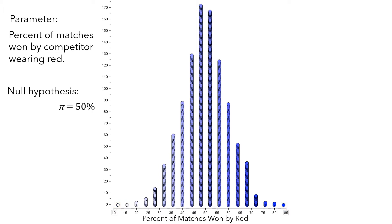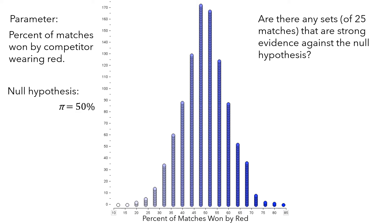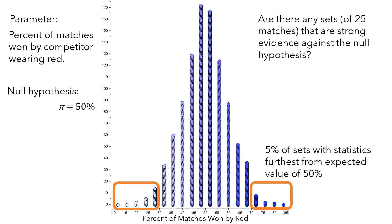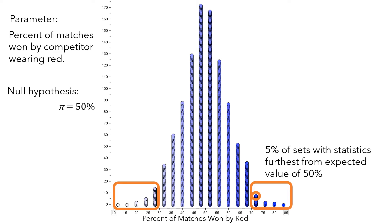One question we should ask is: are there any sets of 25 matches that are strong evidence against the null hypothesis? What we need to do is look at the 5% of sets with statistics that are furthest from the expected value of 50%. By the very way hypothesis testing works, if sampling variation happened to give you one of these sets, you'd have strong evidence against the null hypothesis. So if you got one of these sets and the null hypothesis is true, you would reject it.